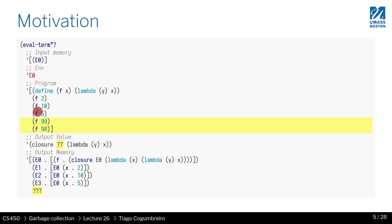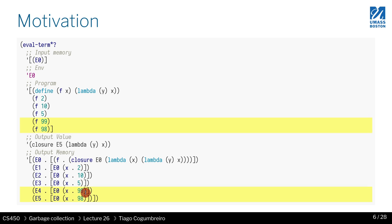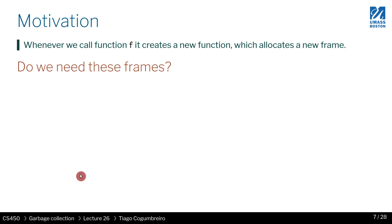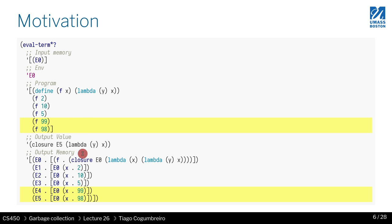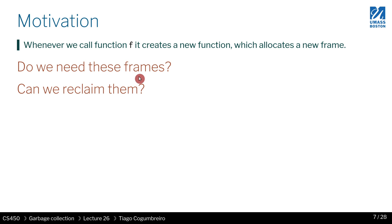If I call it two more times, the closure will point to the last closure, where x is assigned to 98 — which is why I have 95 and 98. So you might be starting to realize a pattern: whenever you call this, your memory is getting bigger and bigger. The question may be, do we really need all these frames? Wouldn't it be nice if we could reclaim them and free some memory?